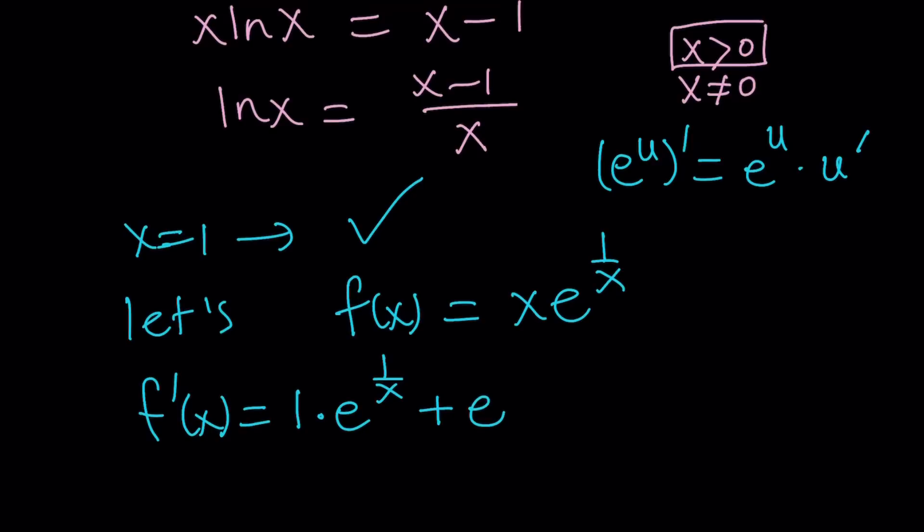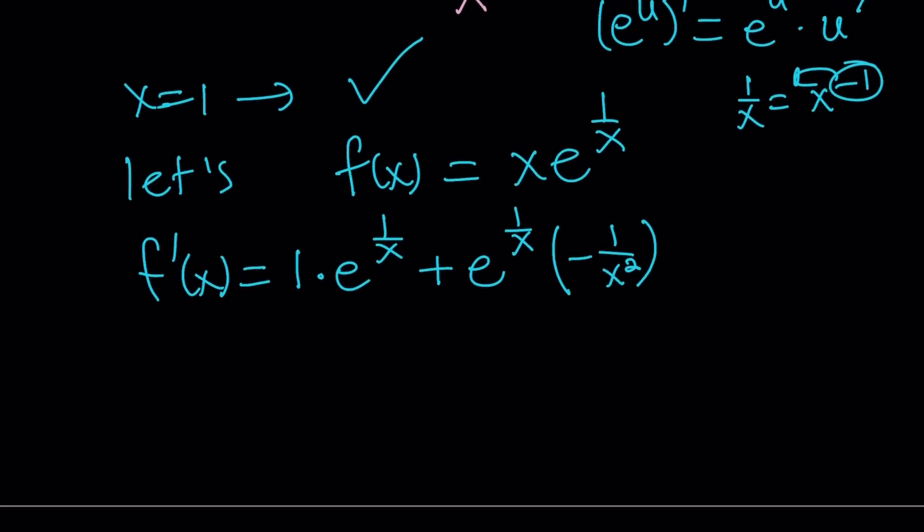So it's going to be e to the power 1 over x, times the derivative of 1 over x, which you should know is negative 1 over x squared. But if you didn't know that, you could always write 1 over x as x to the power negative 1, and then use the power rule for differentiation. And one thing we forgot, we forgot to multiply by the first function because remember, this was a product, so this should also be multiplied by the first function, which is x. So it's the derivative of u times v plus the derivative of v times u. That's the formula.